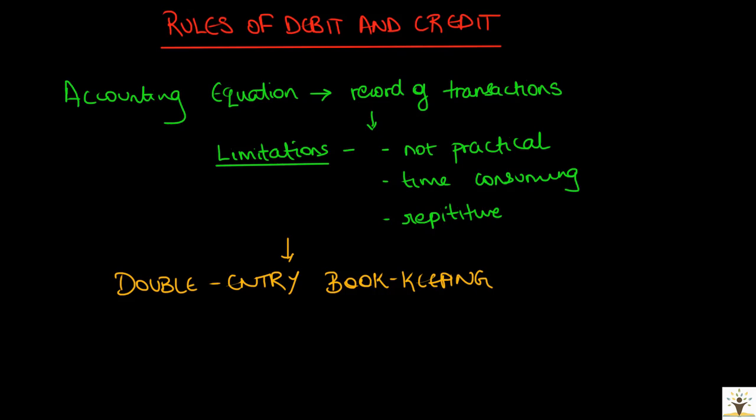Under the double entry system of bookkeeping, each transaction is recorded in a way that debit is always equal to credit. Debit and credit are nothing but two sides of an account. Before understanding debit and credit further in detail, let us see what is an account.